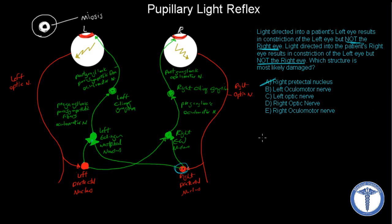What about the left oculomotor nerve? It cannot be the left oculomotor nerve because the left eye is actually the one undergoing constriction, so it's working normally — the transmission from the oculomotor nerve, both pre-ganglionic and post-ganglionic, is working fine. So it cannot be the left oculomotor nerve. What about the left optic nerve? If it were the left optic nerve, no signal would be sent to the left pre-tectal nucleus, and this would result in nothing — both eyes would remain normal without constriction. But since the left eye is constricting, we know it's not the left optic nerve.